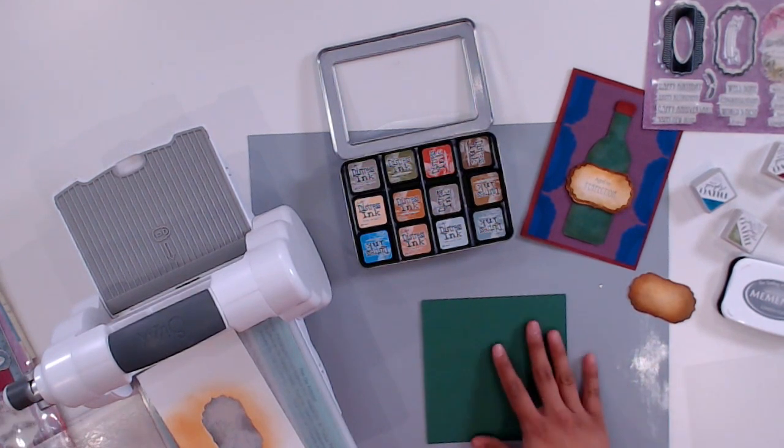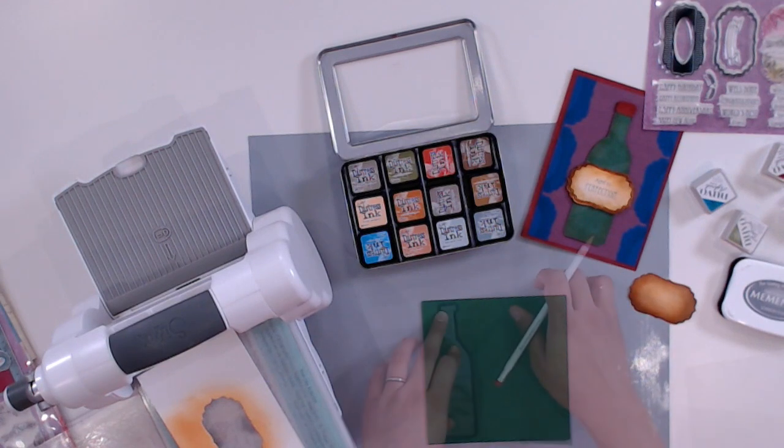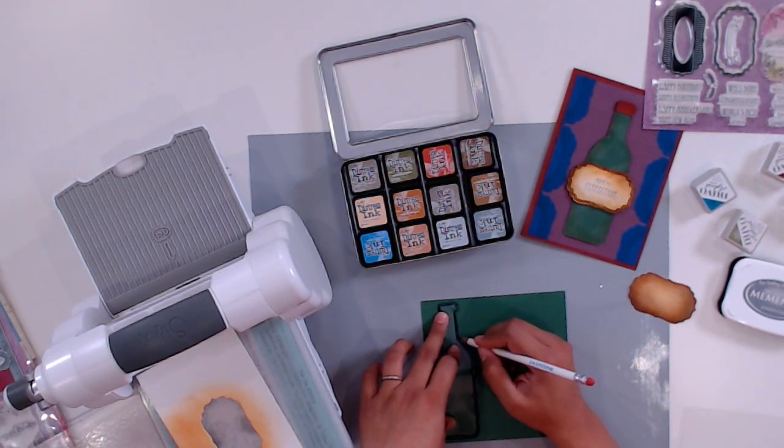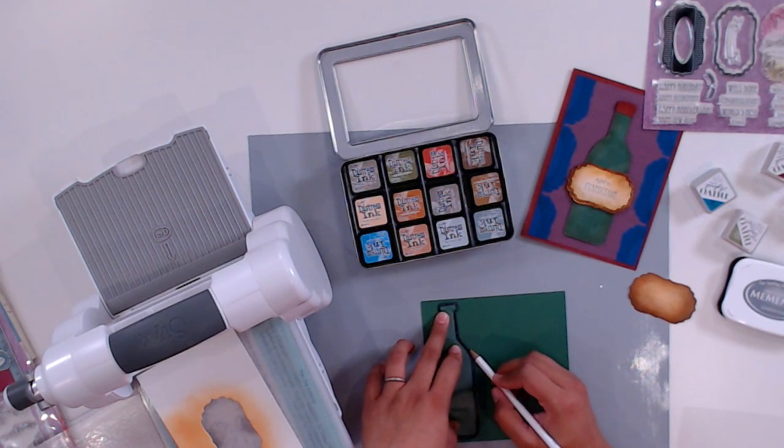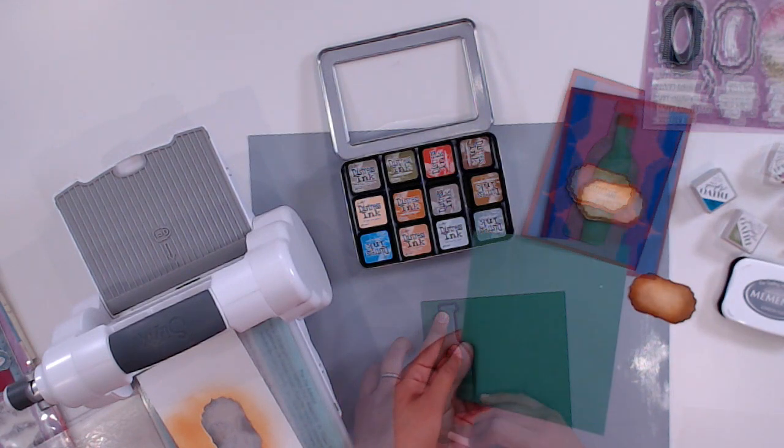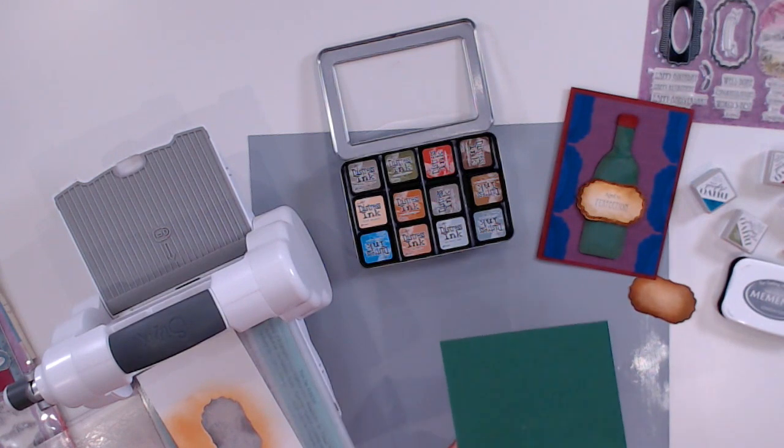For my bottle, I'm using green. I felt like that was a more classic kind of wine bottle. I'm going to use my template that I cut out of acetate and trace that onto my green cardstock. There is my wine bottle shape, traced in pencil so it's really faint.